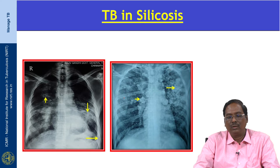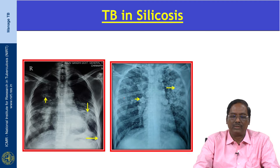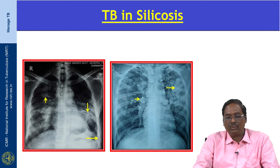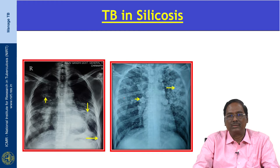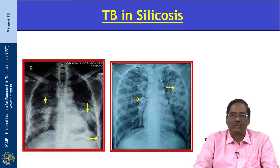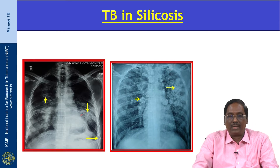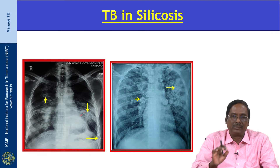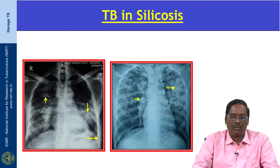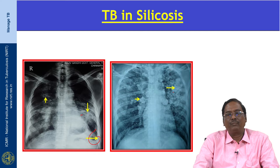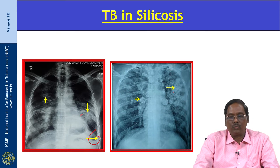Tuberculosis in silicosis occurs 3 to 7 times more in persons with silicosis. Radiological diagnosis of TB in silicosis is very difficult because silicosis itself presents with nodules and masses. Signs of TB in silicosis include rapidly developing soft tissue nodules, conglomerate mass nodules, rapid radiological changes, cavitation in a nodule, opacity surrounding a pre-existing nodule, development of pleural effusion, or middle lobe collapse due to bronchial stenosis.